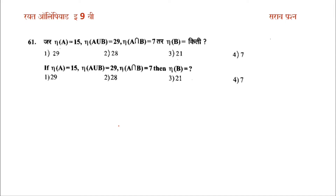Let's start the question. The first question is: when N of A is 15, N of A union B is 30, N of A intersection B is 7, then what is N of B?